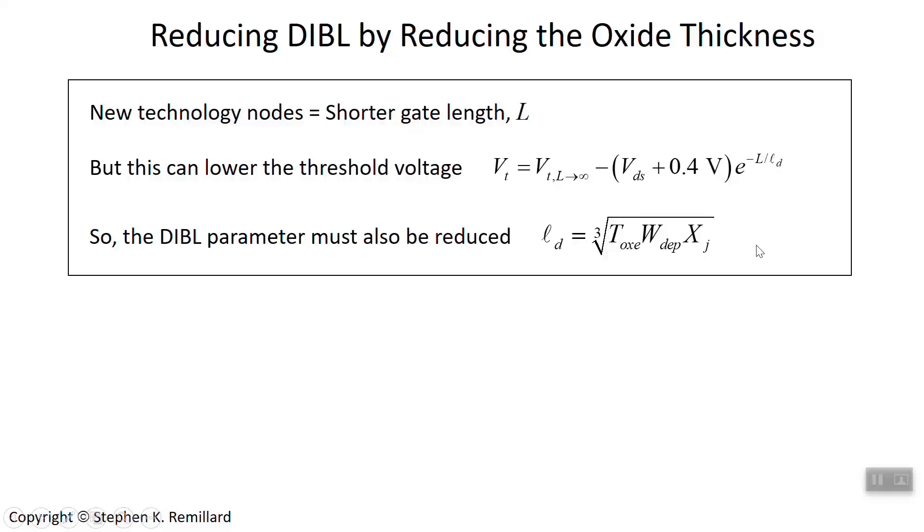We want to keep the DIBL parameter very small. Let's begin by looking at equations 7.3.2 and 7.3.3 in Hu's book. Take a look at these two equations and compare them.